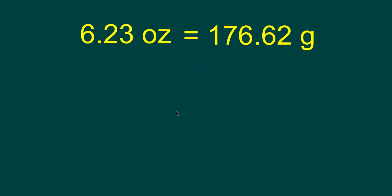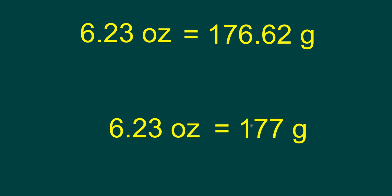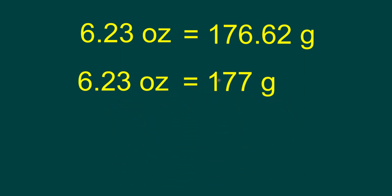Which means 6.23 ounces is equivalent to 176.62 grams. Because our question only has three significant digits in it, our final answer can only go to three significant digits. So, we'll round the 176.62. 6.23 ounces is equivalent to 177 grams.